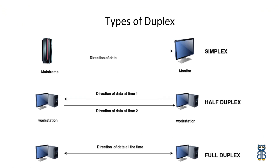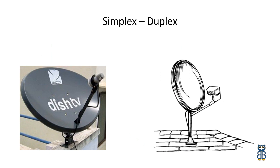Simplex is also called one-way or unidirectional communication. It allows communication in one direction only. Since signals travel in only one direction, the sender device uses the entire communication channel. The receiver device only receives signals and cannot reply using the same channel. TV remotes, garage door openers, dish TV, and smart speakers are examples of simplex.